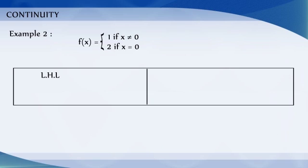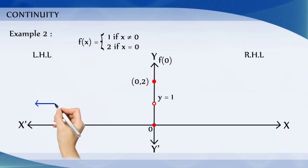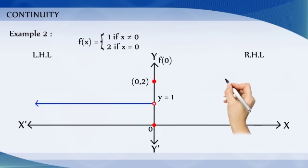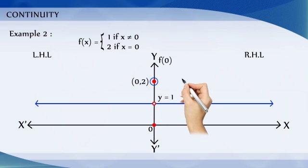The left and the right hand limit at x is equal to 0 are both equal to 1. But the value of the function at x is equal to 0 equals 2. It does not coincide with the common value of the left and right hand limit. For this graph also, we cannot draw the graph of the function without lifting the pen. This is another example of a function being not continuous at x is equal to 0.